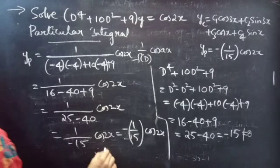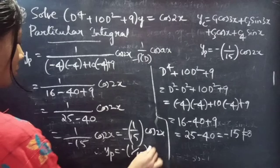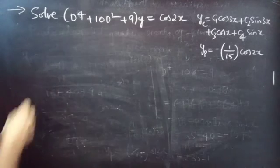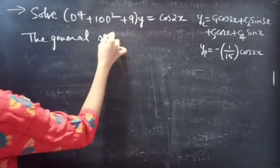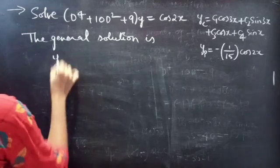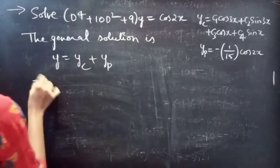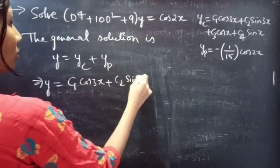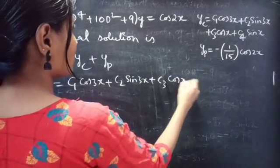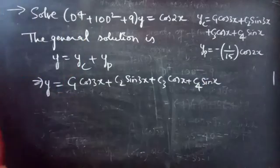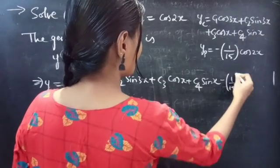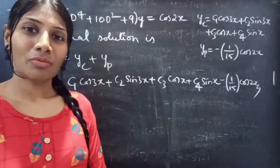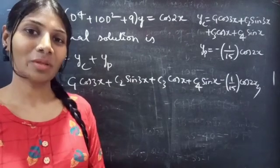Therefore, yp = -(1/15)·cos(2x). The general solution y = yc + yp = c₁cos(3x) + c₂sin(3x) + c₃cos(x) + c₄sin(x) - (1/15)cos(2x), which is the required solution. So we have seen a problem from higher order linear differential equations. Hope you understand. We'll see you in the next video — until then, bye bye.